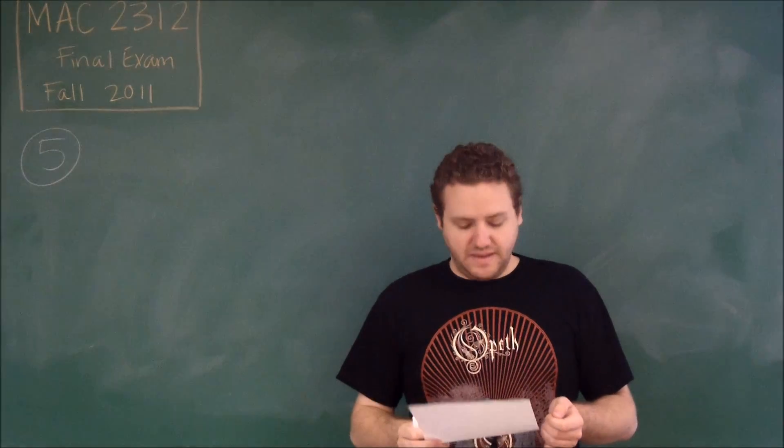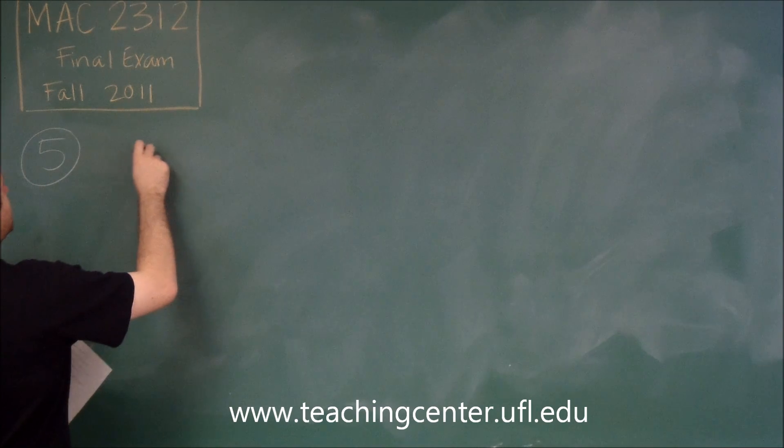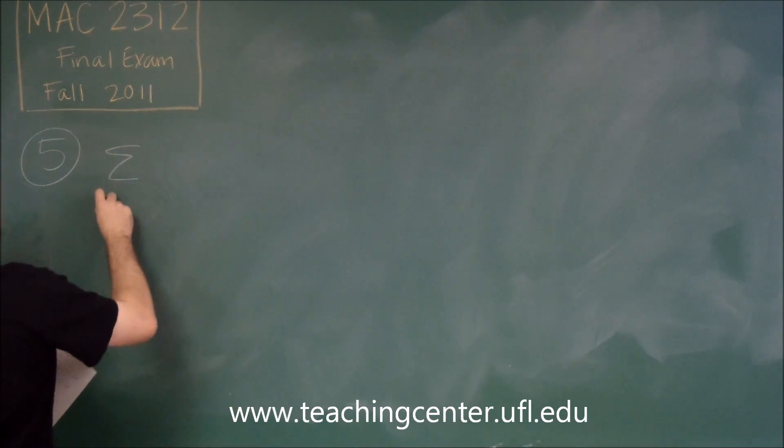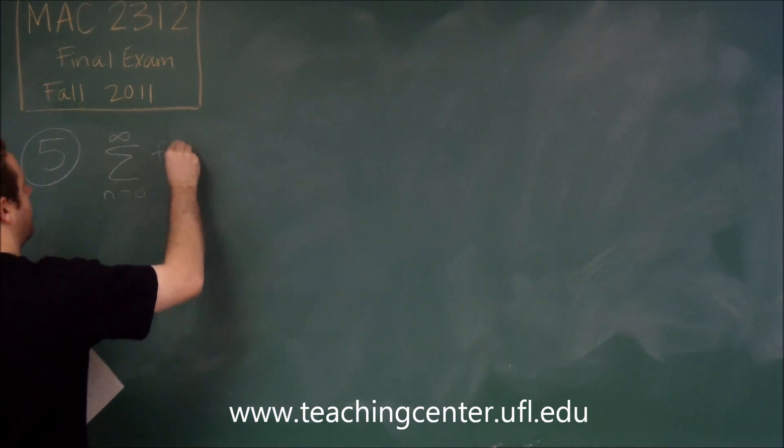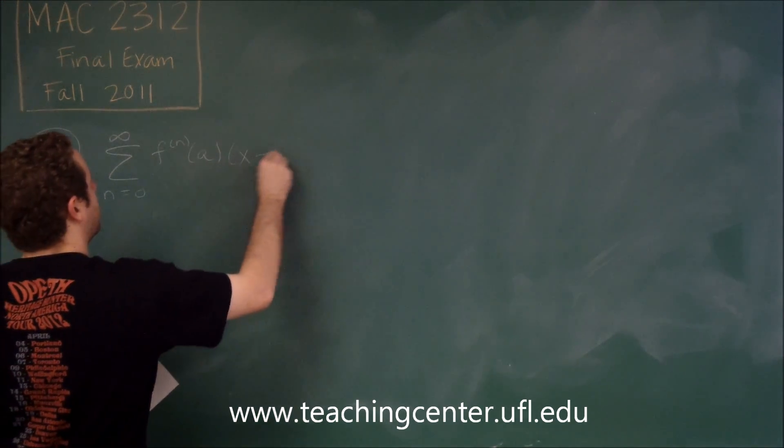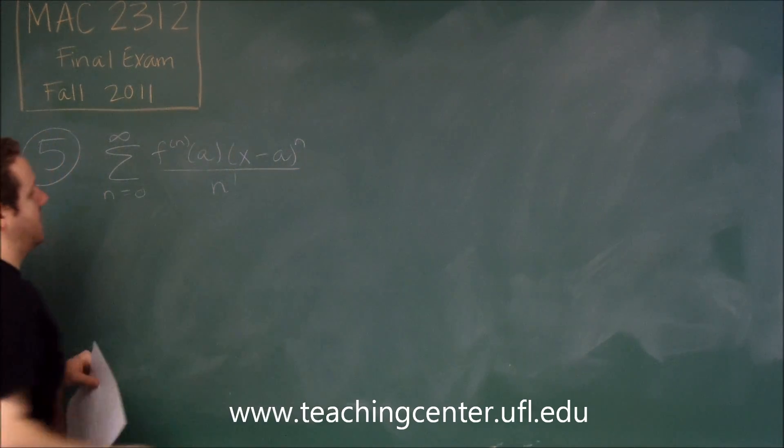So for number 5 we're using the Taylor formula. Remember that the Taylor formula says that some function is equal to the sum of the nth derivative of f at a, times x minus a to the n, divided by n factorial.